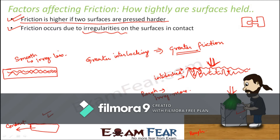Imagine trying to move the same box on the rough surface while somebody is pressing it from above — it becomes all the more difficult to move it. This is how the factor of how tightly or loosely the surfaces are pressed together determines how much friction the surface exerts. Friction is all because of interlocking between surfaces: interlocking increases — friction increases; interlocking decreases — friction decreases.